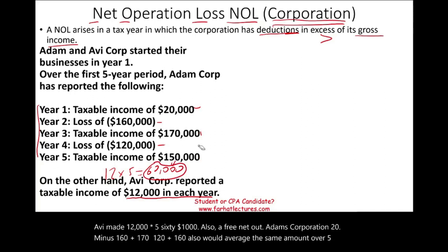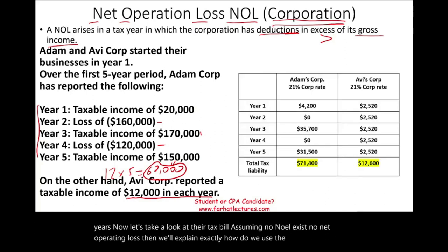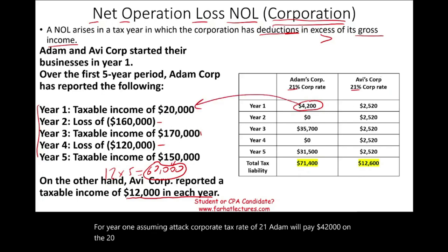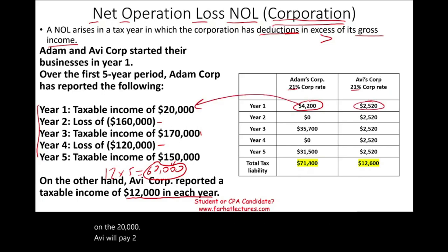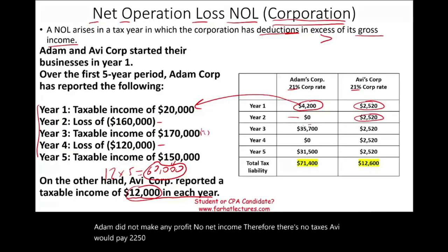Now let's take a look at their tax bill, assuming no NOL exists. Assuming a corporate tax rate of 21%, Adam will pay $42,000 on the $20,000 in year one. Avi will pay $2,250 based on $12,000. In year two, Adam had no profit, so no taxes. Avi would pay $2,250. In year three, Adam will pay $37,500 because the taxable income was $170,000.